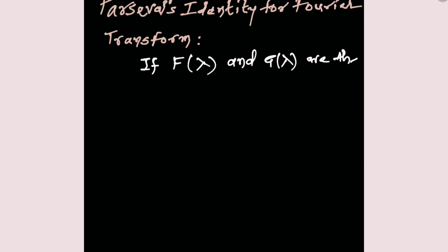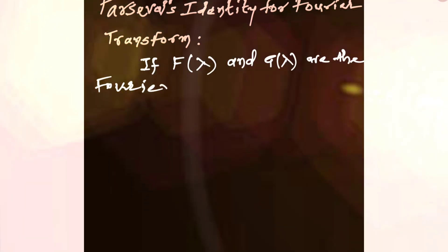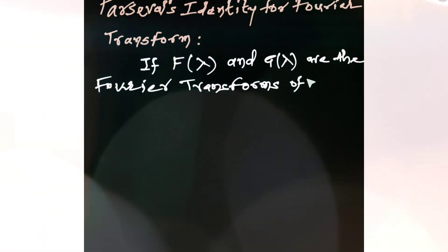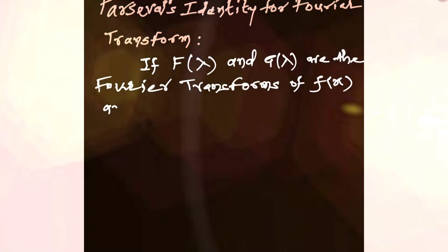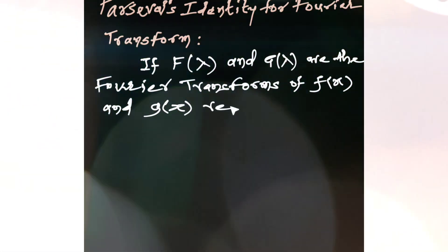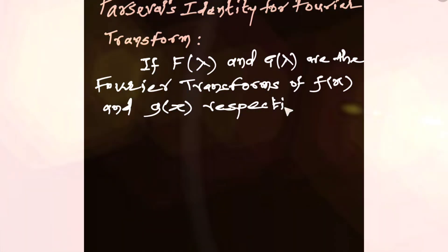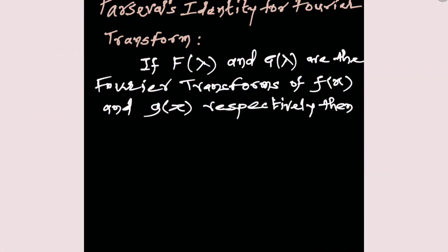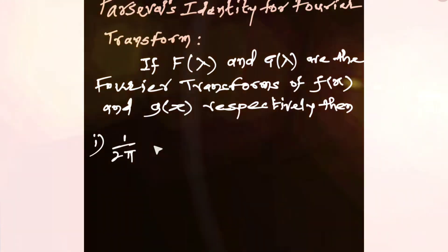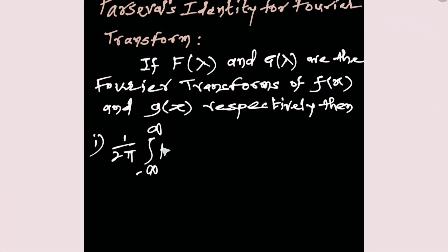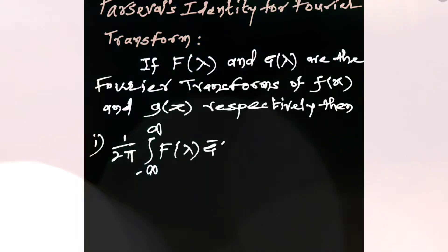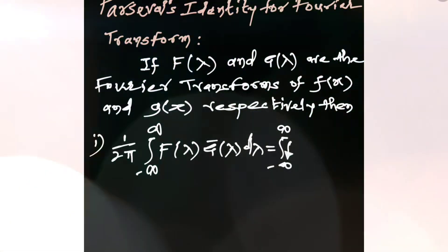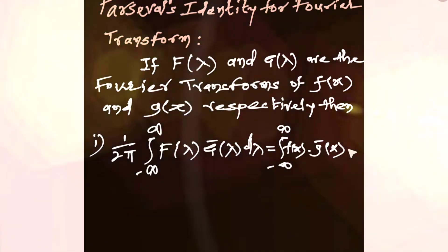If F of lambda and G of lambda are the Fourier transforms of the functions f of x and g of x respectively, then result number 1: (1/2π) times the integral from minus infinity to infinity of F(lambda) into G-bar of lambda d-lambda equals the integral from minus infinity to infinity of f(x) into g-bar of x dx.